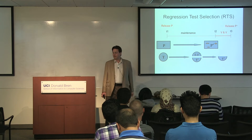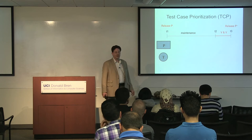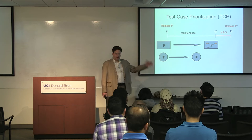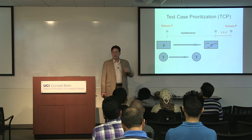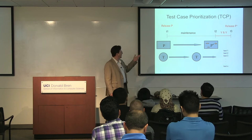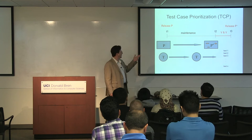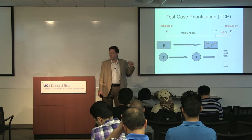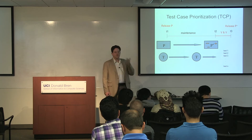An alternative approach I looked at a few years after regression test selection is called test case prioritization. Rather than throwing any tests out, you analyze something about the tests to determine which are more important and prioritize them so that the more important tests run first. If testing is cut short, you've hopefully run the most important tests. And if you can put fault-detecting tests first, you can detect faults earlier and get above debugging sooner.